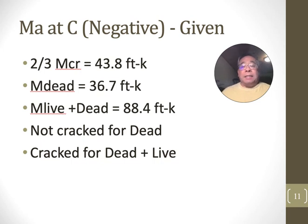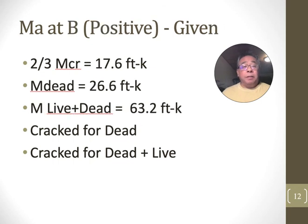And finally, at the positive moment, in the middle, the cracking moment is much smaller. It's two-thirds of the cracking moment is 17.6. The dead only in the middle is 26.6, so cracked. That's bigger than 17.6. And obviously, live plus dead is cracked at 63.2. So, under dead, the two left and right ends are not cracked. The middle is cracked. And under dead plus live, all three are cracked.